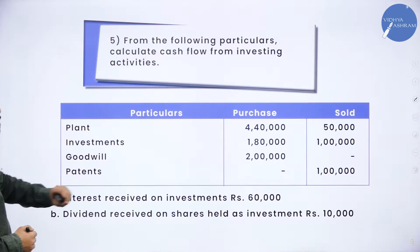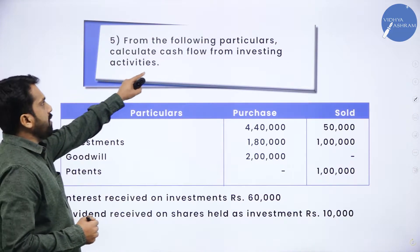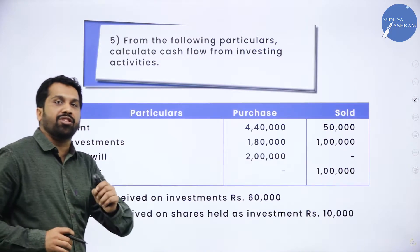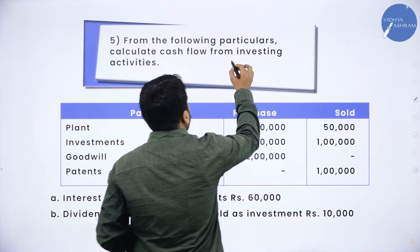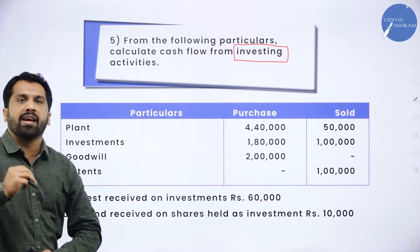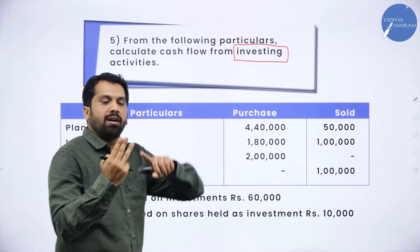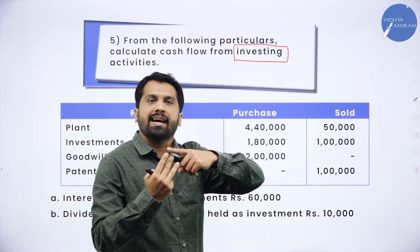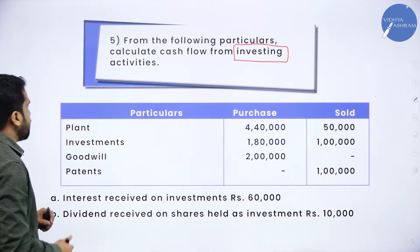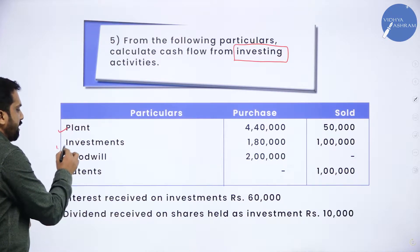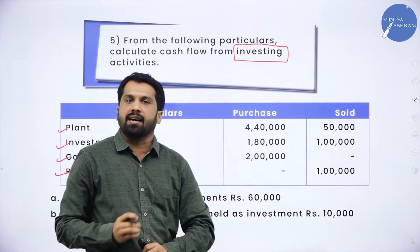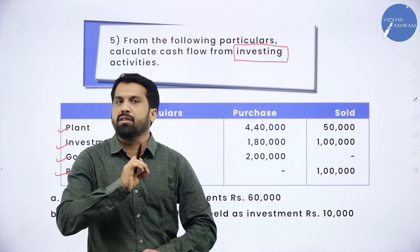Now, the first problem: from the following particulars, calculate cash flow from investing activity. Which activity? Investing activity. How many activities do we have? Three: operating, financing, and investing. In this question, you have plant, investment, goodwill, and patent. In the previous session, I gave you the logic on how to find whether it is a cash inflow or a cash outflow.